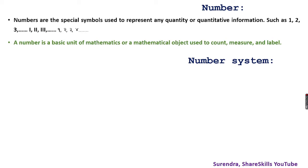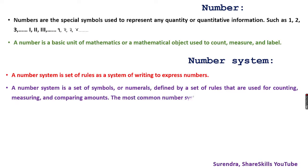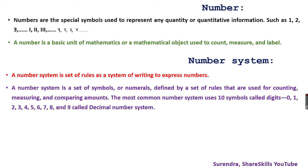Number is the basic unit of mathematics. Without numbers there is no mathematics, no calculation. It is the basic unit used to count, measure, and label. When we talk about number systems, there are definitely particular rules so that it can be processed and function. Number system is the set of rules — a system of writing and expressing numbers.